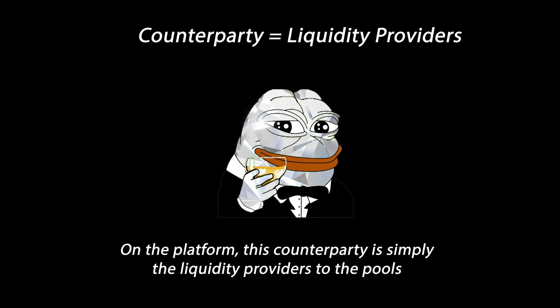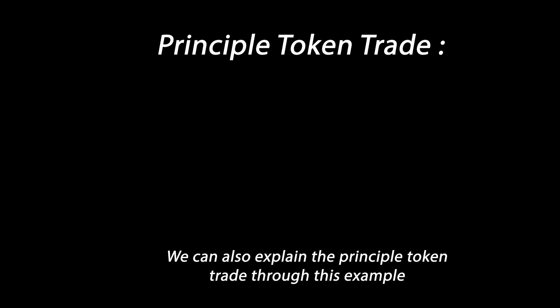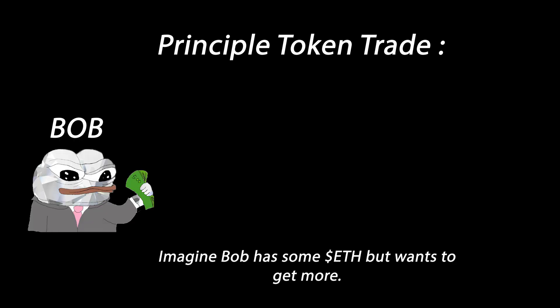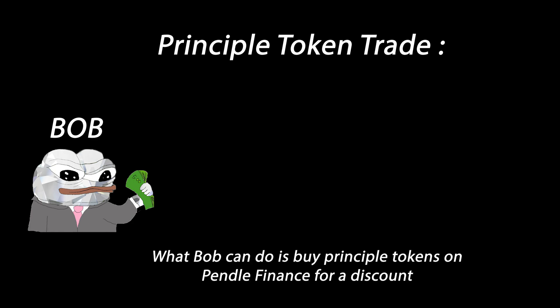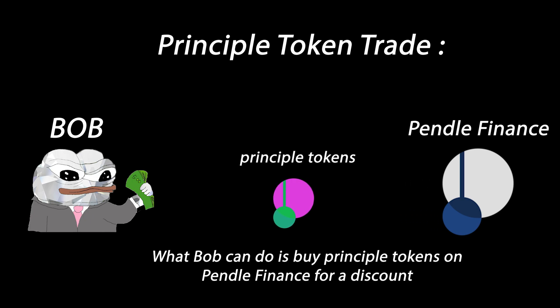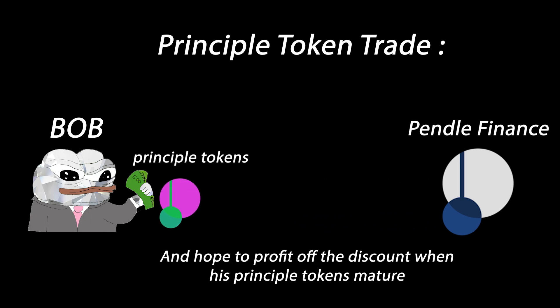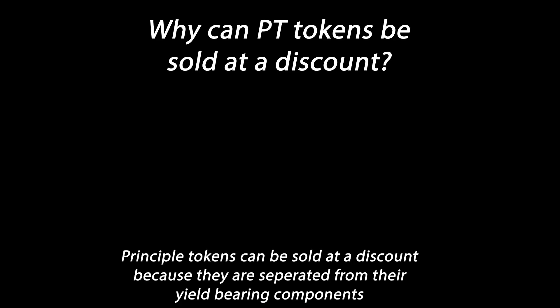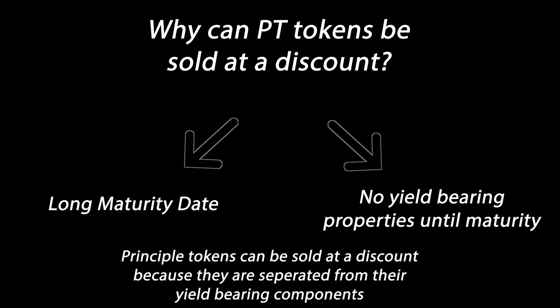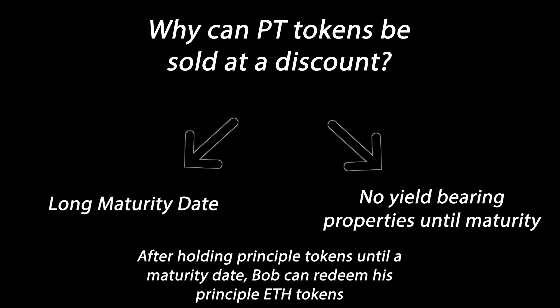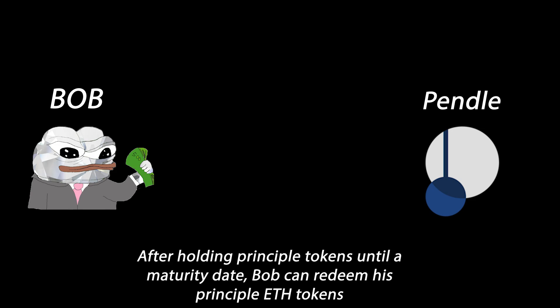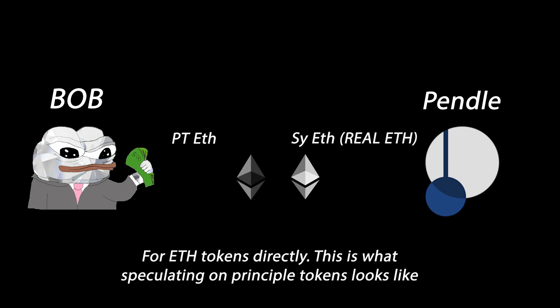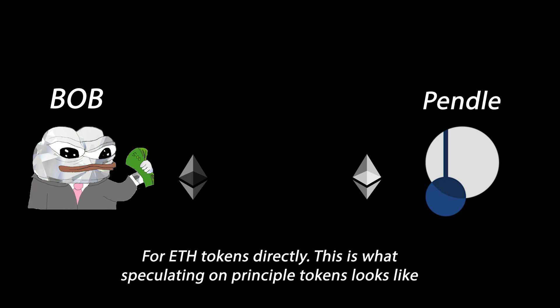We can also explain the principal token trade through this example. Imagine Bob has some ETH but wants to get more. What Bob can do is buy principal tokens on Pendle Finance at a discount and hope to profit off the discount when his principal tokens mature. Principal tokens can be redeemed 1 to 1 to their yield-bearing counterparts after a maturity date has passed. Principal tokens can be sold at a discount because they are separated from their yield-bearing components. After holding principal tokens until a maturity date, Bob can redeem his principal ETH tokens for ETH tokens directly.